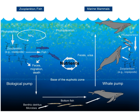Ecological systems have many biogeochemical cycles operating as a part of the system — for example, the water cycle, the carbon cycle, the nitrogen cycle, etc. All chemical elements occurring in organisms are part of biogeochemical cycles.